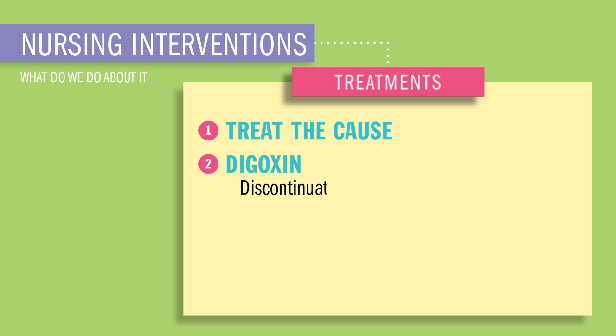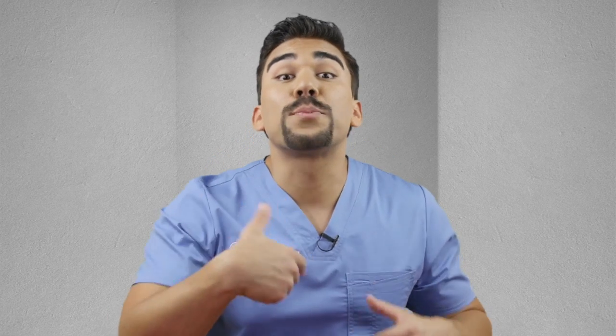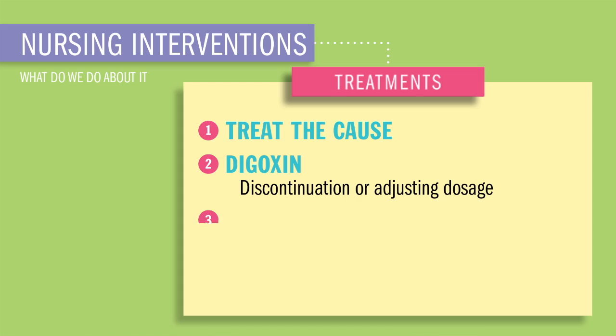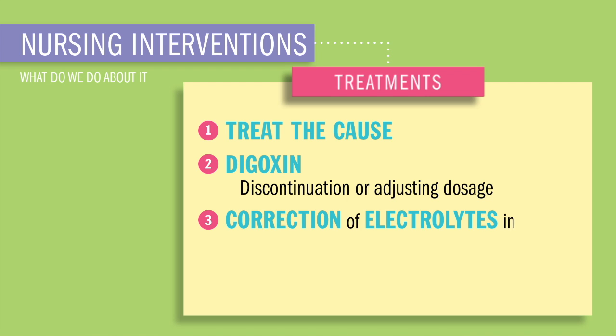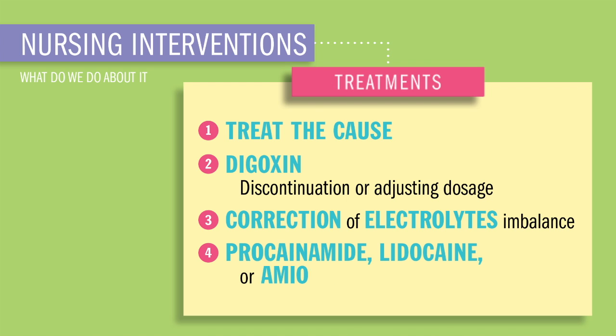Lastly, medications. We might discontinue or just lower the dose of digoxin. Digoxin is known as an inotropic drug — it basically increases the contractility of the heart, and it could be the reason that our heart is prematurely contracting. Also, we can correct the electrolyte imbalances. And lastly, we can relax the heart with drugs like procainamide, lidocaine, and amiodarone, if warranted.